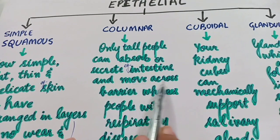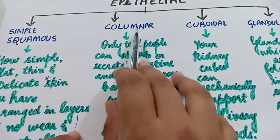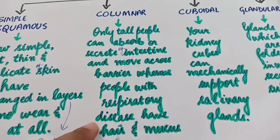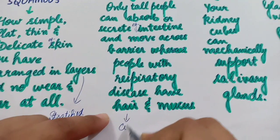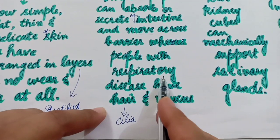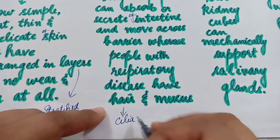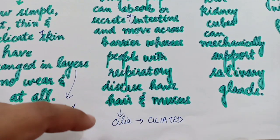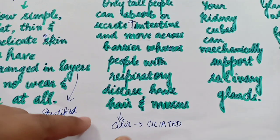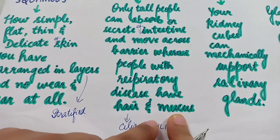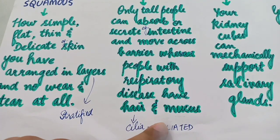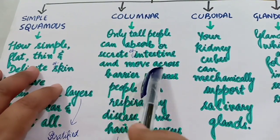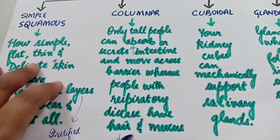This same columnar epithelial tissue, when it is present in the respiratory tract, has hair-like structures which are called cilia. That is why it is called ciliated epithelium. Along with cilia, these ciliated columnar epithelium also produce mucus. So the sentence: 'Only tall people can absorb or secrete in the intestine and move across the barrier. Whereas people with respiratory disease have hair and mucus.'